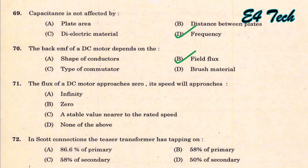If the flux of a DC motor approaches zero, its speed will approach infinity. Since the speed of a DC motor has an inverse relation with flux, if flux is zero, speed approaches infinity. That is option A.